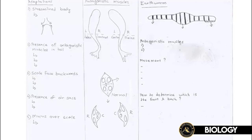Adaptation number four is the presence of an air sac. If you cut a fish open, there is a lot of space inside because of the air sac. This air sac provides a buoyant force that allows the fish to float easily in the water and helps the fish move through water more easily. Adaptation number five is mucus over the scales. If you've held a fish at the market, you know it's very slimy — this mucus reduces the water tension hitting the fish's body.